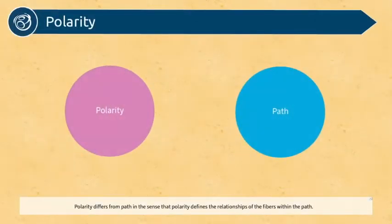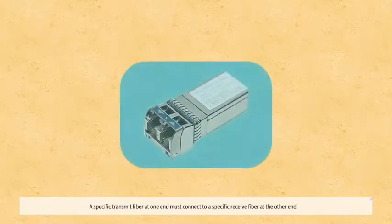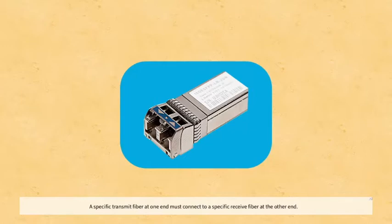Polarity differs from path in the sense that polarity defines the relationship of the fibers within the path. A specific transmit fiber at one end must connect to a specific receive fiber at the other end.